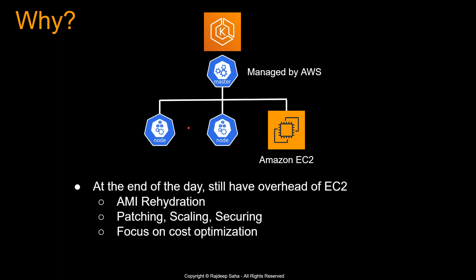At the end of the day, whenever you have EC2, you still have some overhead — such as you have to do AMI rehydration, patching, scaling, securing them, and focusing on cost optimization. For those of you working in enterprise, EC2s most of the time are underutilized. It doesn't matter if the CPU and memory of the EC2 is only 20% utilized at certain times — you still pay the full price.